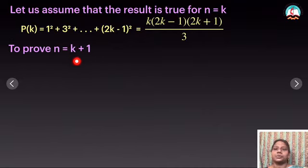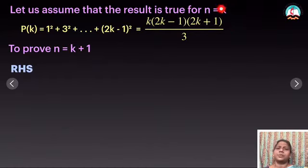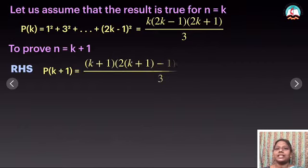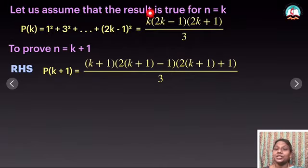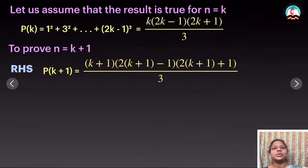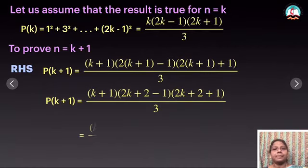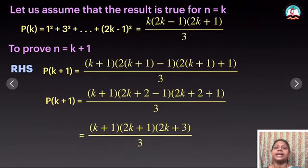Now we have to prove that n equal to k+1 is true. I am separating LHS and RHS. I am taking RHS first because it is easy to prove since the nth term is given. Therefore, P(k+1) on the RHS equals k(2k-1)(2k+1)/3 with k substituted by k+1. That gives (k+1)(2(k+1)-1)(2(k+1)+1)/3. Taking 2 inside and simplifying, I get (k+1)(2k+1)(2k+3)/3. This is my RHS.